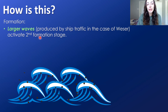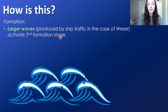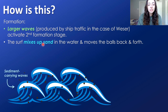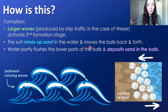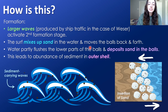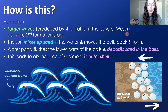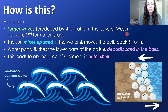Larger waves — produced by ship traffic on the morning of the 6th in the case of the Weser estuary — activated a second stage of formation, causing the outer shells of the ice balls to form. Because the larger waves mixed sand and sediment into the water, and that water moved the balls back and forth, it partially flushed the lower parts of the balls and deposited sand in them, leading to the abundance of sediment in the outer shell. This formation mechanism was proposed specifically for the Weser estuary; other regions where ice balls occur could have a slightly different but probably very similar mechanism.